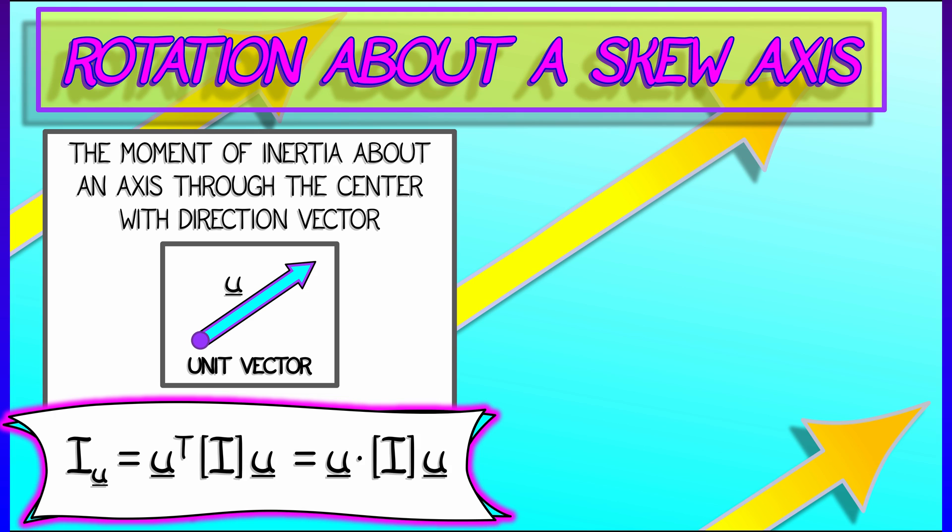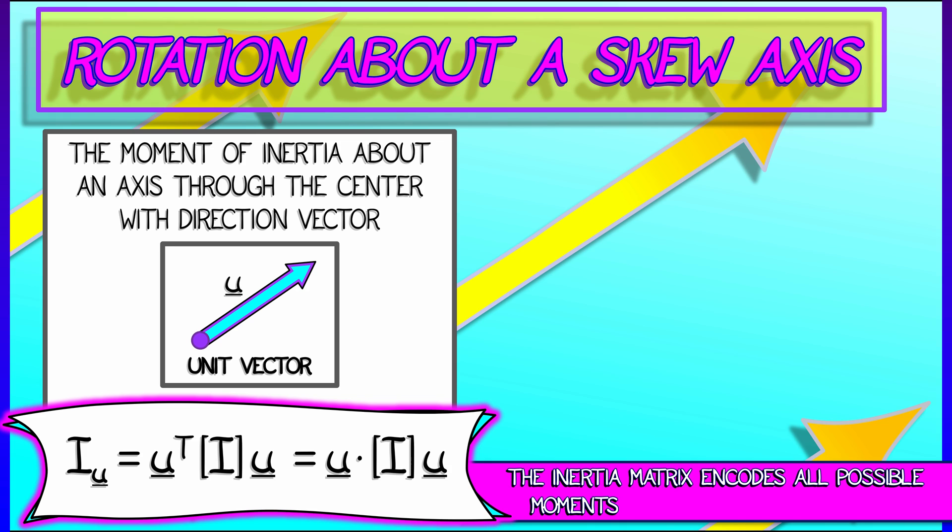then I simply take u transpose i u, or if you like, u dot i u. I'm using that inertia matrix as the basis for a quadratic form, and that one inertia matrix encodes all possible moments about the center of your frame.